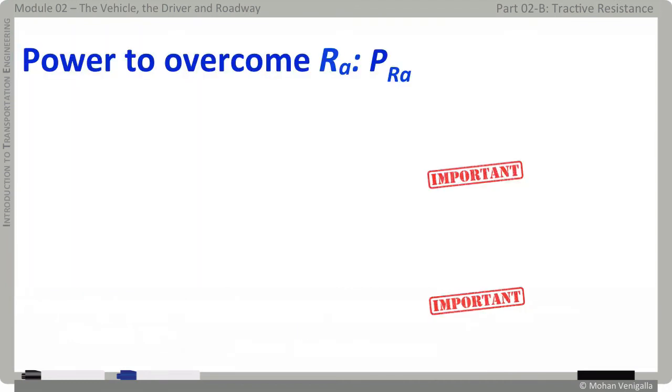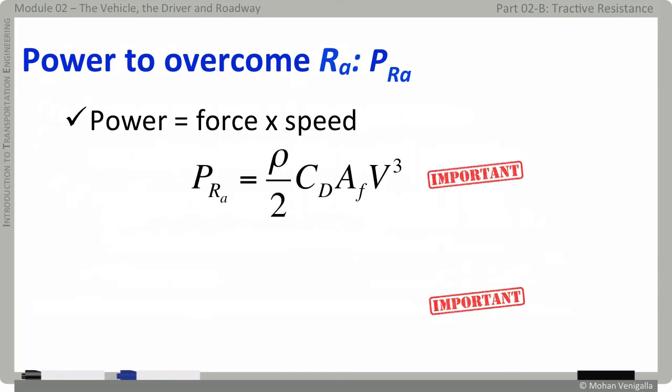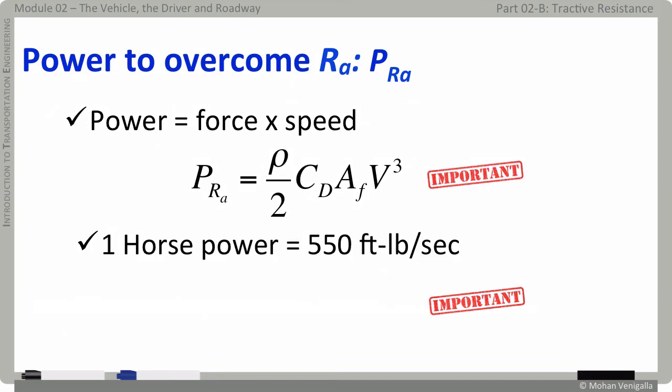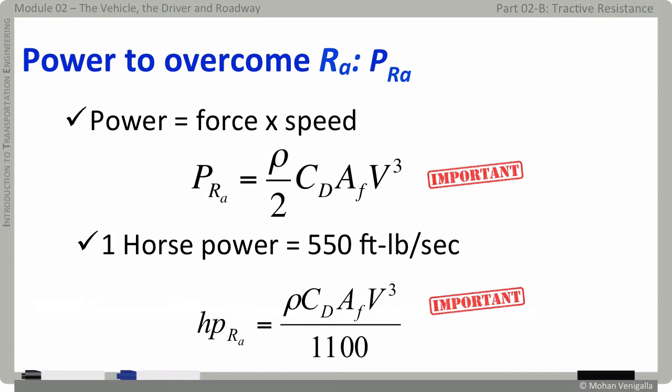We can develop an expression for the power needed to overcome aerodynamic resistance. Since power equals force times speed: P_Ra = (rho/2) × C_D × A_F × V³. Note that required power is proportional to the cube of velocity — the faster the car goes, the more power is required. Since one horsepower equals 550 foot-pounds per second, dividing by 550 gives the horsepower required to overcome aerodynamic resistance.